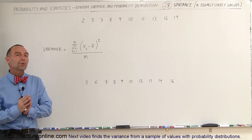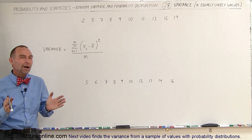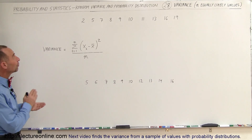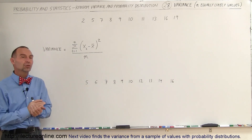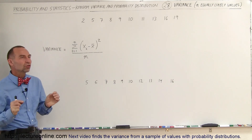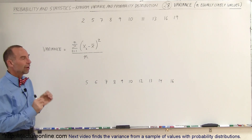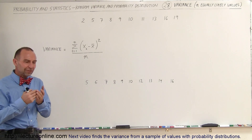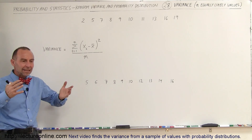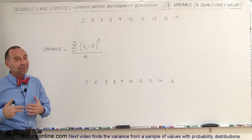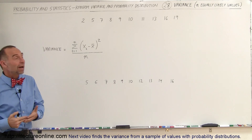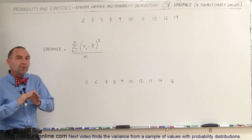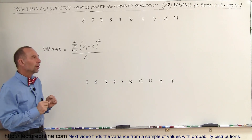Welcome to Elector Online. We're going to see a new topic in the area of random variable and probability distribution which is called the variance. The word itself would indicate how much variation there is, and that's really what it amounts to — it's a measure of how much variation there is in the numbers.